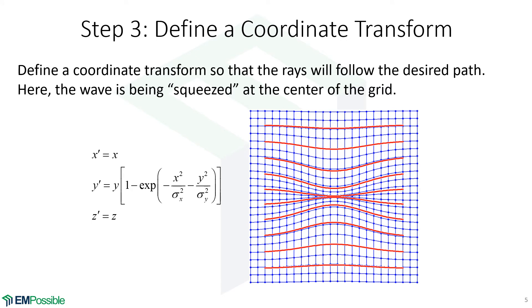And this is usually the most difficult part. We come up with a set of equations that define our coordinate transform. And here, what we're trying to do is squeeze the rays through a little pinhole. So maybe the wave squeezed down, goes through a pinhole and comes back out. But we're just doing this for demonstration purposes. So we've defined our coordinate transform such that these red lines, the path of the wave would now follow the path that we want.